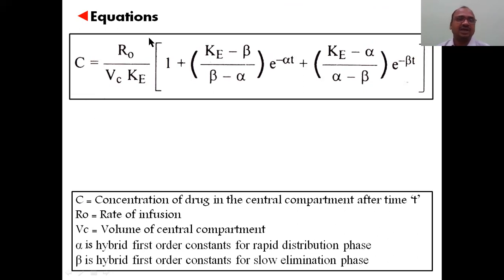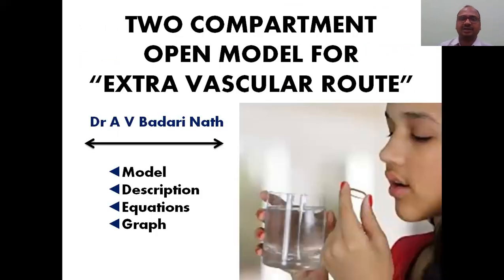C is the concentration of drug present in the central compartment after time t. Ro is the rate of infusion - two drops per second, three drops per second, how much ml per second. Vc is the volume of central compartment. Ke is the elimination rate constant, and alpha and beta are the hybrid constants. By using this you can calculate it. We will see this in the next video.